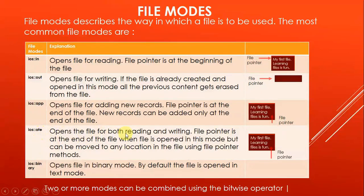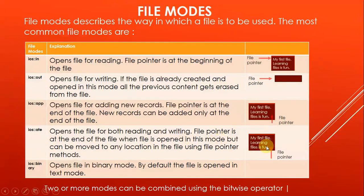ios::ate opens the file for both reading and writing, with the file pointer at the end of the file when opened. However, it can be moved to any location in the file using file pointer methods. In ios::app mode, the pointer can only add records after the last record and cannot be moved upward. However, in ios::ate mode, the file pointer can be moved to any location in the file.